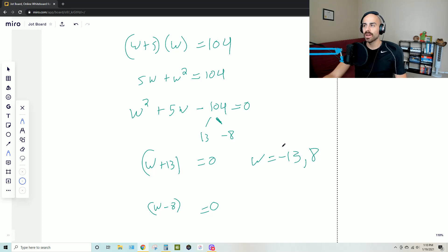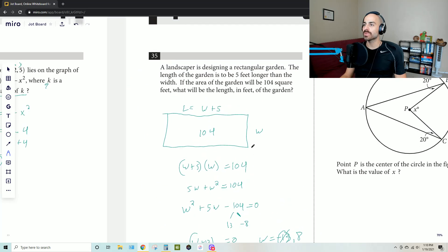When we're thinking about a width, unless you want to get like super science fictiony, or maybe real science, we can't describe it as a negative. That's not going to work for us. We know that the width must be eight, which is positive.